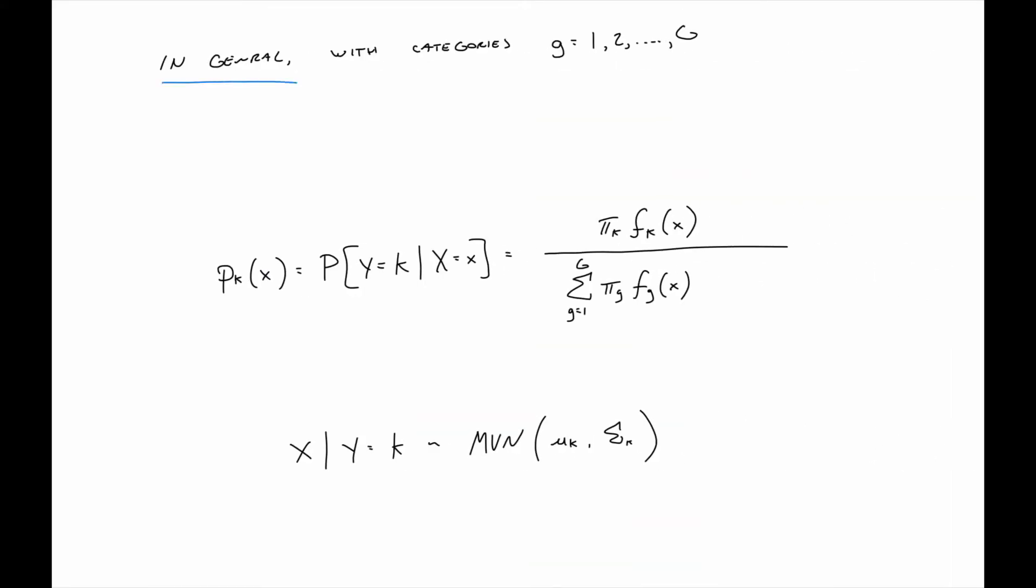So in general, we might have more than two categories zero and one. We might have potential categories one through capital G. And in that case, this is just the general expression. But notice that this quantity here, which we have the prior times the likelihood, keeps popping up. And taken together, that can be the joint distribution that we ultimately wanted to model. And note that this f sub k here is going to be assumed to be conditioned on y equals k and is assumed to be multivariate normal with location parameter mu sub k and shape parameter sigma sub k.